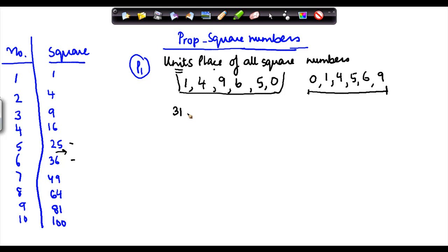Going by the earlier video where I clarified, 31 is not a square number because there is no natural number between 5 and 6, no natural number x whose square is equal to 31. So therefore 31 is not a square number but at the units place 31 has 1 and 1 is one of these digits.